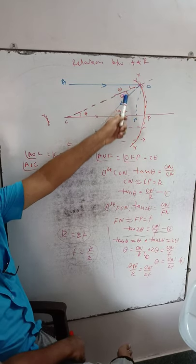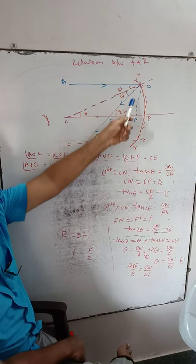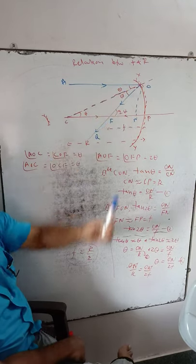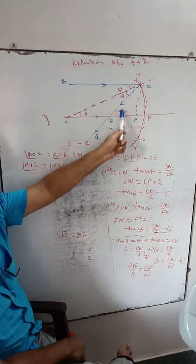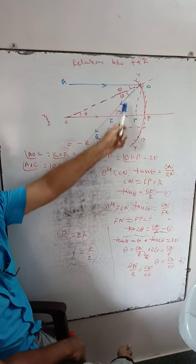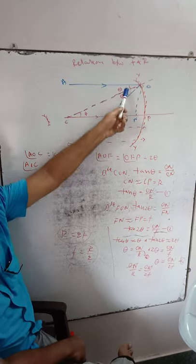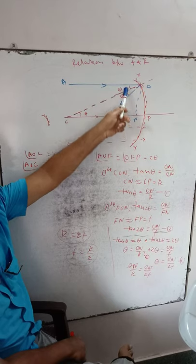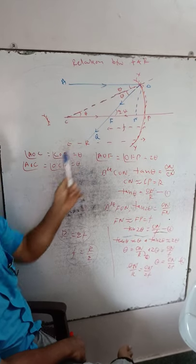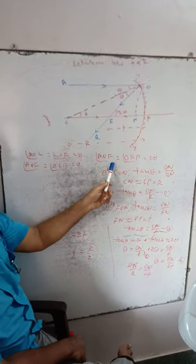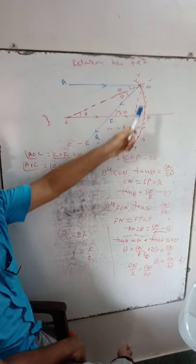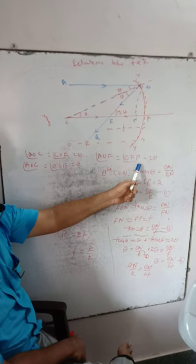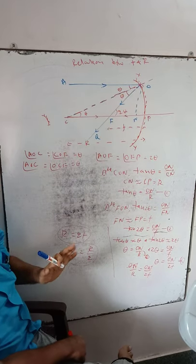The sum of these two angles — AOC plus OCF — gives theta plus theta equals 2 theta. This 2 theta and the exterior angle become alternating angles, so angle OFC also equals 2 theta. Therefore, angle AOC equals angle OFP equals 2 theta.